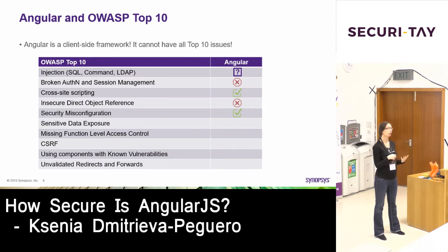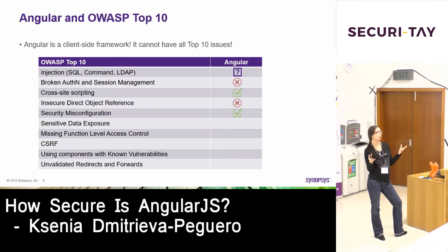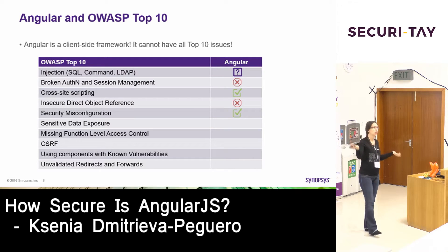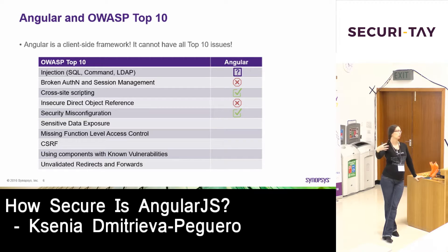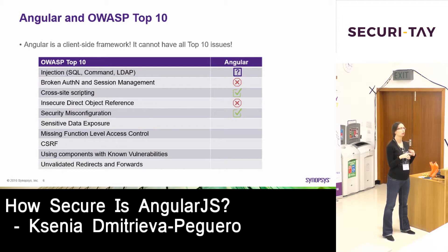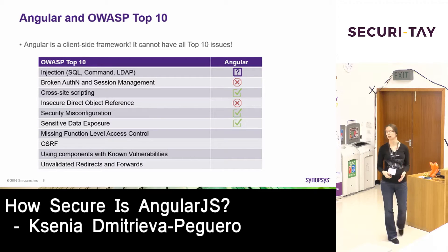Sensitive data exposure — that's when you save account numbers or bank credit card numbers and display them on the client side. You have to display those things for the user, but what you shouldn't be doing is storing these things on the client side. Angular gives you a wrapper around the JavaScript local storage object. Local storage keeps data in the browser even when you log off. With other browser memory storage, you log off, close the browser, data is gone. With local storage it persists forever — so if anyone else uses the same computer they can get that information.